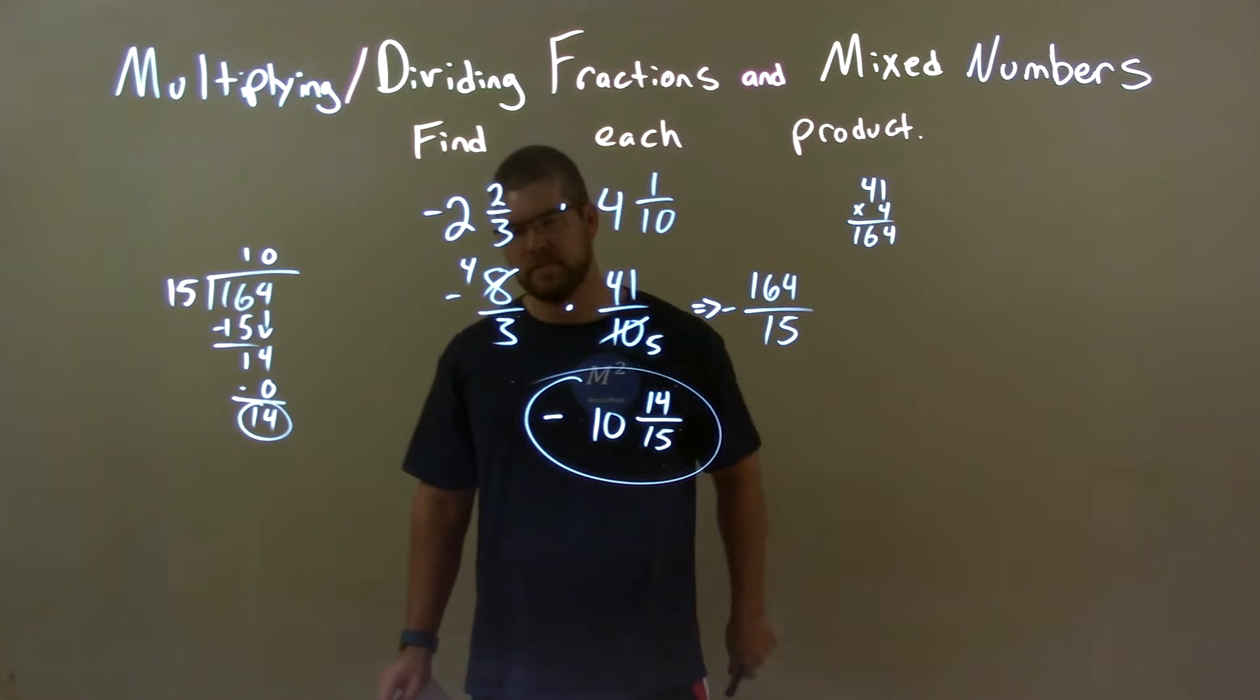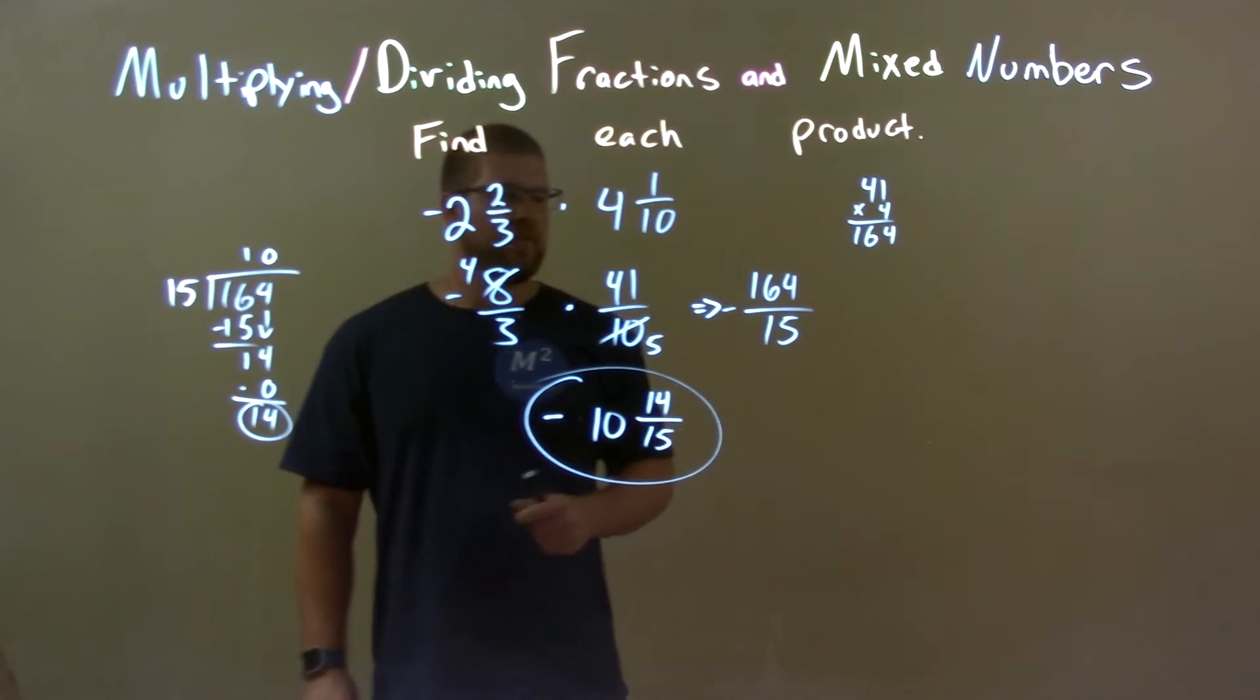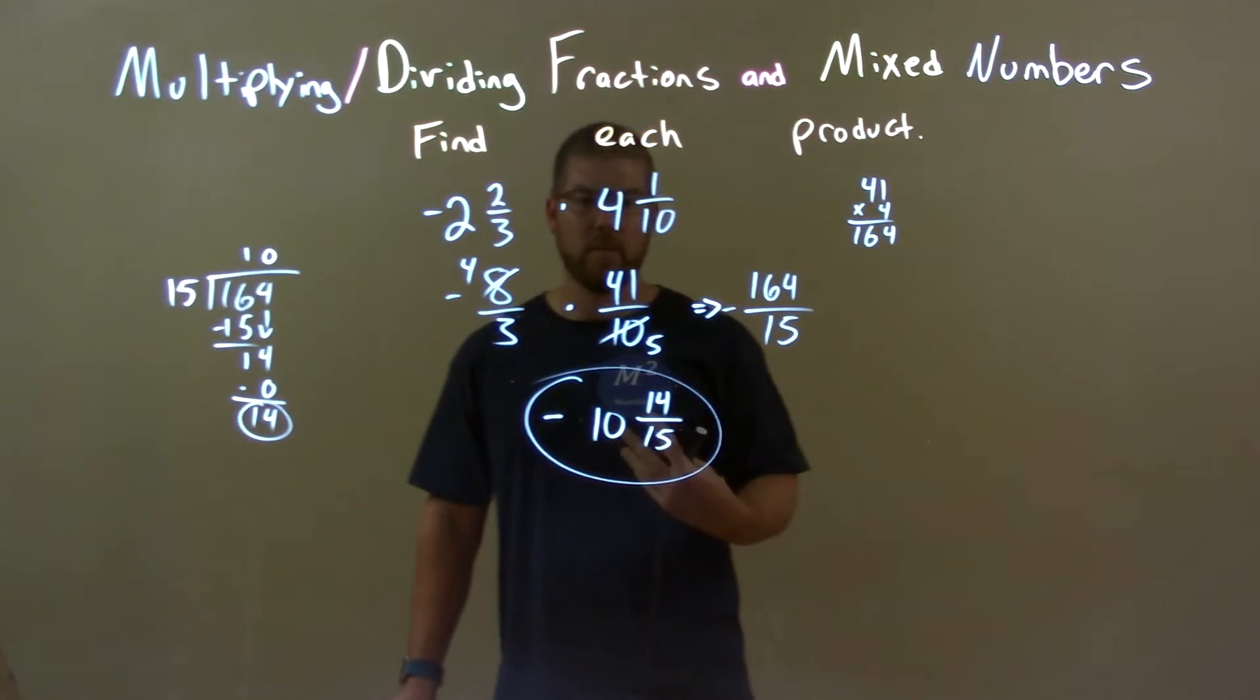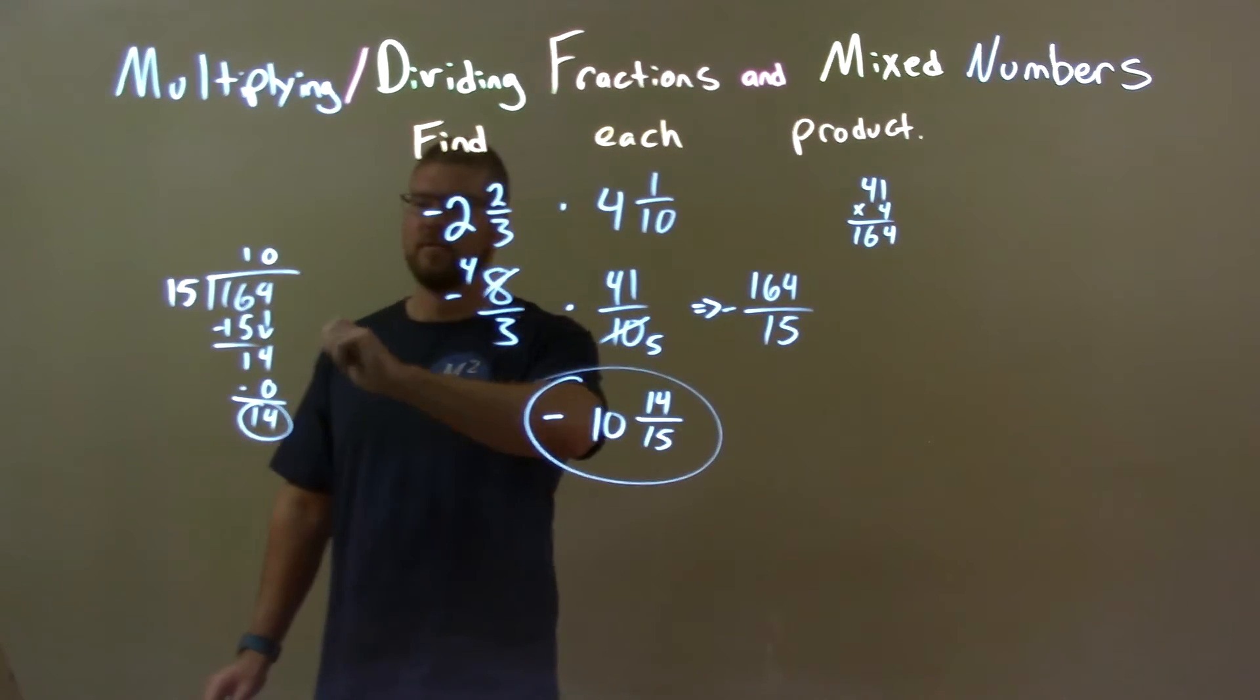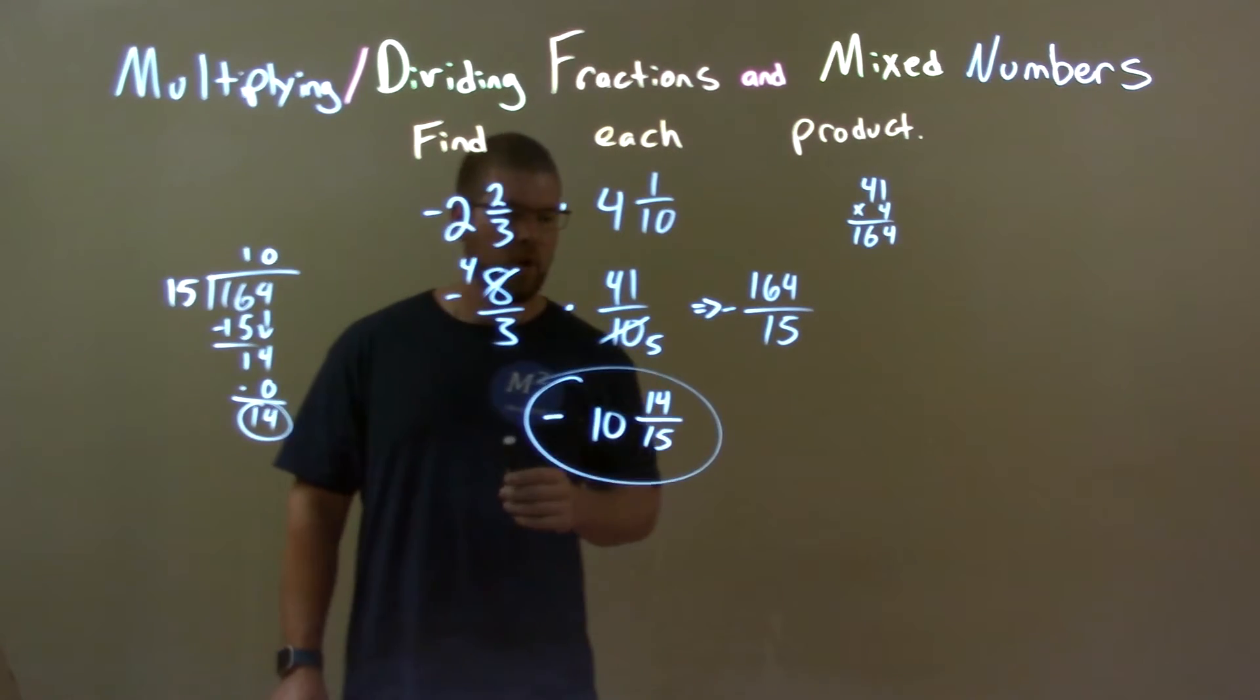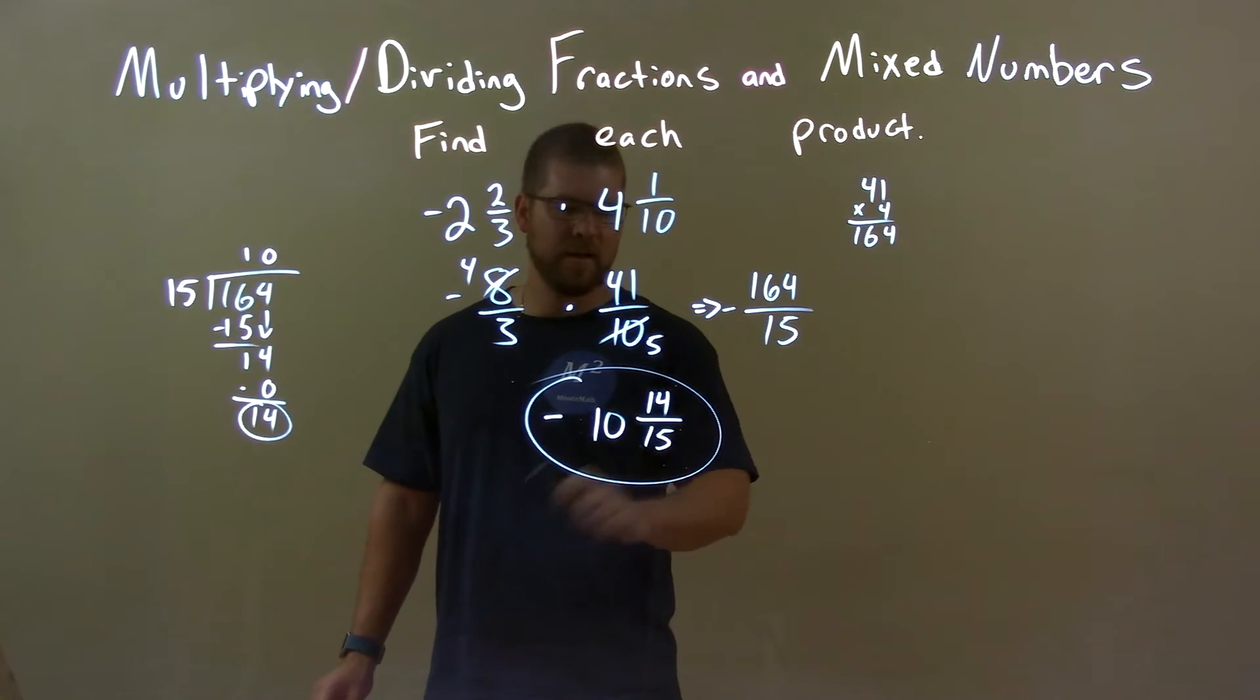Got negative 164 over 15. Then did some long division to see how many times 15 goes into 164 to make this back into a mixed fraction. So 15 goes into 164 ten times evenly. We have 10 here with 14 left over. So 10, 14 left over over the 15.